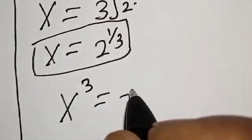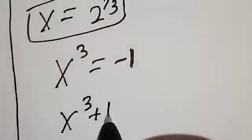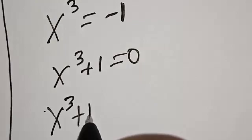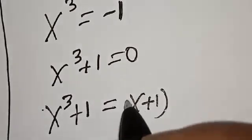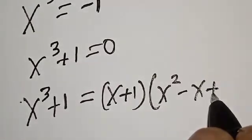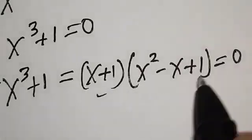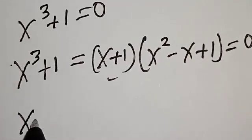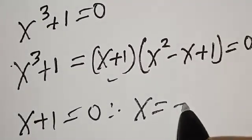Also from the second case, s raised to power 3 is equal to minus 1. We have s raised to power 3 plus 1 is equal to 0. This factors as s plus 1 into s squared minus s plus 1 is equal to 0. From here, s plus 1 equals 0, therefore s is equal to minus 1.